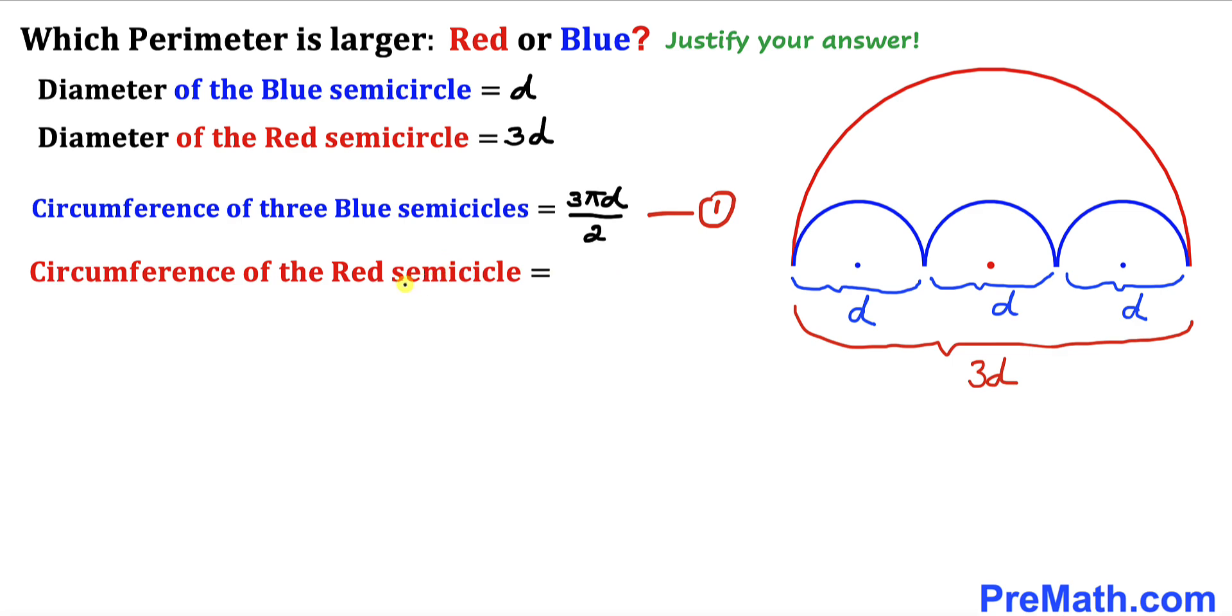Now let's calculate the circumference of this red semicircle. Let's recall once again the circumference of a circle formula, which is πd. In our case, the diameter for this red semicircle is 3d. Therefore, the circumference of this red semicircle is π times 3d. Since we are dealing with a semicircle, I'm going to divide it by 2, which gives us 3πd divided by 2. Let me call this equation number 2.